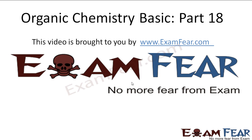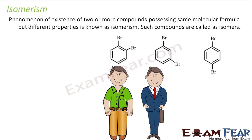Hello friends, this video on organic chemistry basic part 18 is brought to you by examfee.com. Let's start with isomerism. So what is isomerism? We have two or more compounds that have the same molecular formula but different properties — maybe chemical and physical. Such compounds are called isomers.